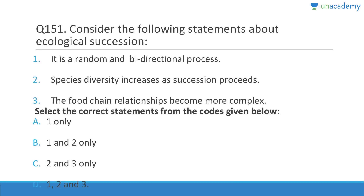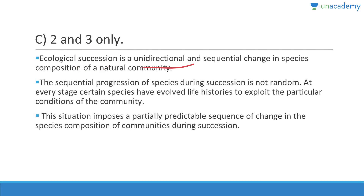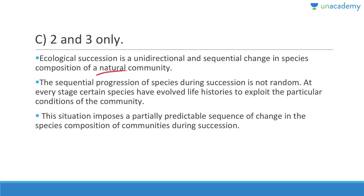Ecological succession is not a random or bi-directional process — it is unidirectional and sequential. Species diversity increases as succession proceeds, and food chain relationships become more complex. The sequential progression of species during succession is not random; at every stage, certain species have evolved life histories to exploit the particular conditions of the community, imposing a partially predictable sequence of change in species composition.